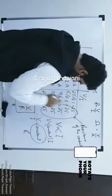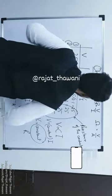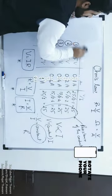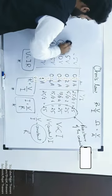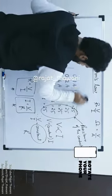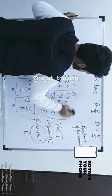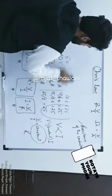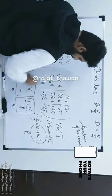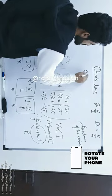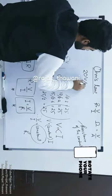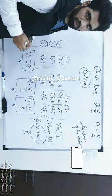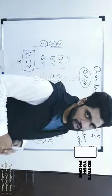So the unit for resistance can also be written as V upon A. If in a numerical problem they give you that the resistance of a conductor or resistor is 20 volts per ampere, don't get confused — it's nothing but Ohms.